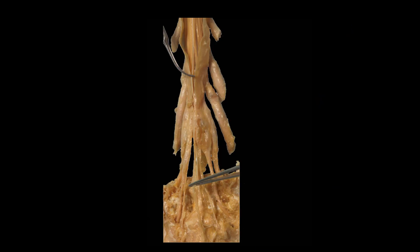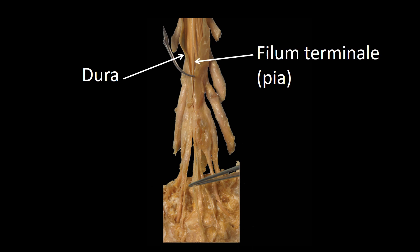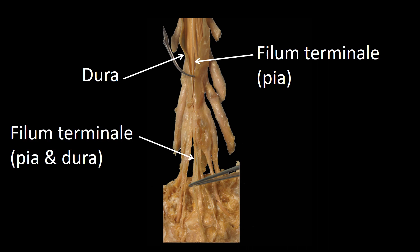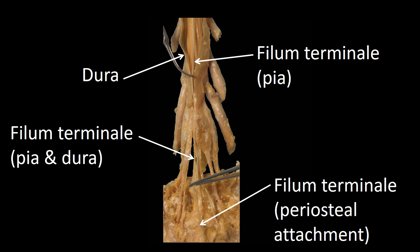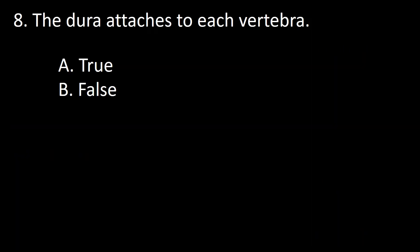This is a specimen of the lower spine. You can see the dura and the filum terminale, which at this level consists of pia, but when it comes close to the bone it consists of pia and dura. This structure is attached to the periosteum of the sacral bone. So the answer to this question is false.